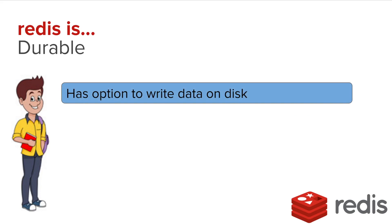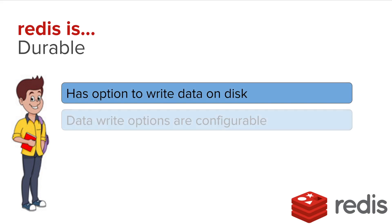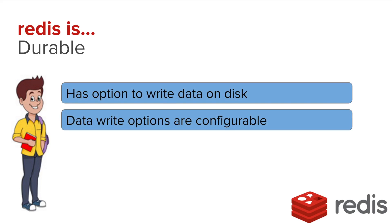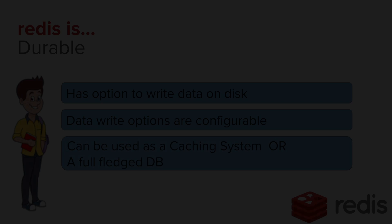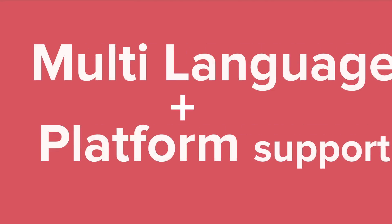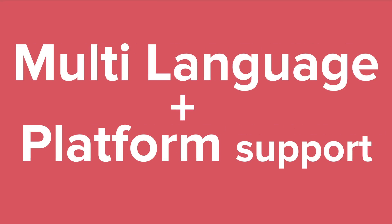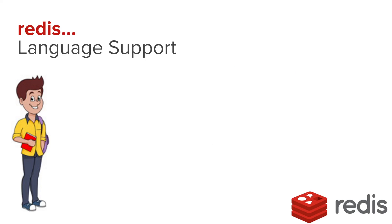How durable is Redis? In Redis, although it works on data in the memory in the cache, but it has the option to write on the disk and this option is configurable. We can use Redis as a caching system or as a full fledged database.